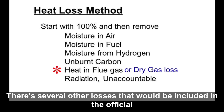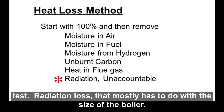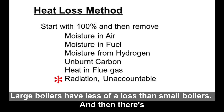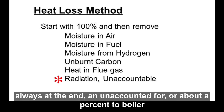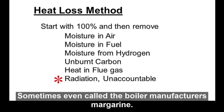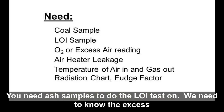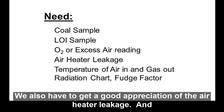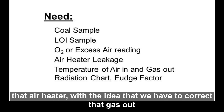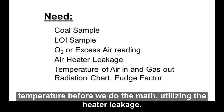There are several other losses included in the official test: radiation loss, which mostly relates to boiler size — large boilers have less loss than small boilers — and an unaccounted-for loss of about one percent, sometimes called the boiler manufacturer's margin. To run a boiler efficiency test, you need a coal sample, ash samples for the LOI test, excess O2 and excess air levels, and a good appreciation of air heater leakage. We measure temperatures of the air in and gas out around the air heater, correcting exit gas temperature for air heater leakage.